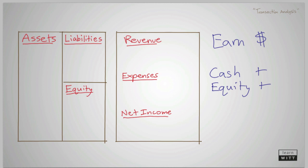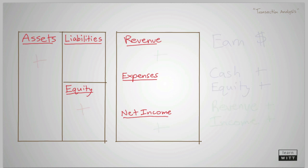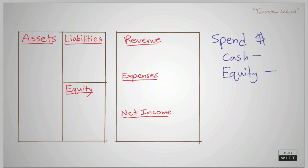When a business earns money, an asset account will increase and an equity account will increase. Correspondingly, a revenue account will increase and net income will increase. When a business spends money, an asset account will decrease and an equity account will decrease. Correspondingly, an expense account will increase and net income will decrease.